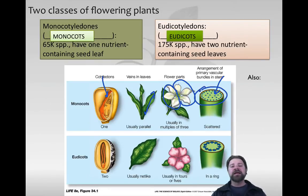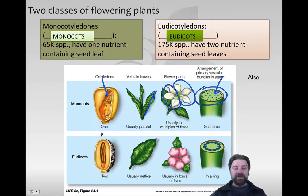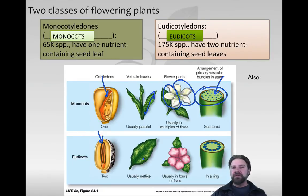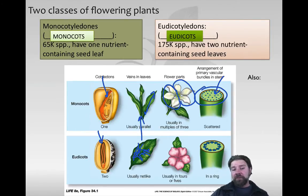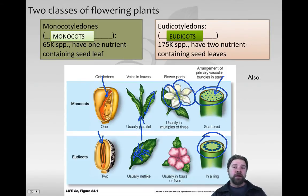Contrasting with monocots, we have dicots. Dicots have about 175,000 species today. They have two nutrient seed-containing leaves - that's where their name comes from. The leaves of a dicot are typically net-like versus parallel, so we don't see those same parallel lines but rather a complex net-like pattern. Their flower petals come in fours or fives - for example, a five-petaled flower. And if you slice through a stem instead of seeing scattered bundles, you'd see a nicely arranged ring that brings water upward and phloem downward.